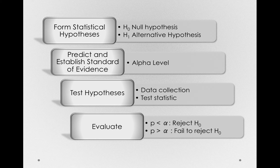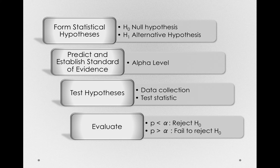In the last module, we explored the steps to hypothesis testing: forming our statistical hypotheses — that is, the null and alternative — predicting and establishing a standard of evidence, which involved creating our alpha value, testing our hypotheses, which involved data collection and forming a test statistic, and finally, evaluating our hypotheses in light of the evidence we've collected.